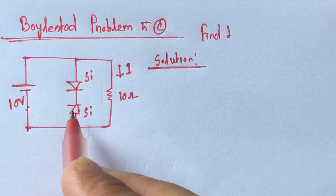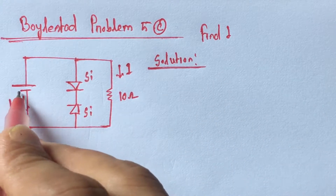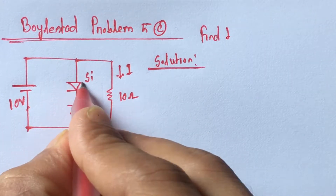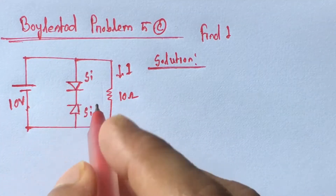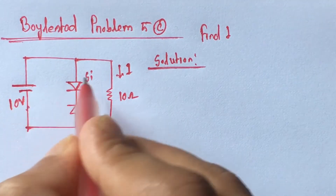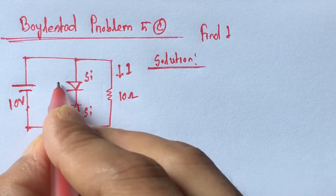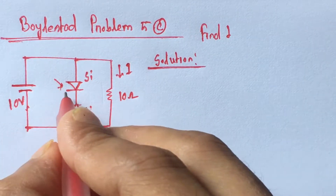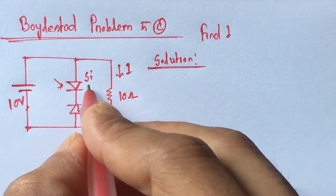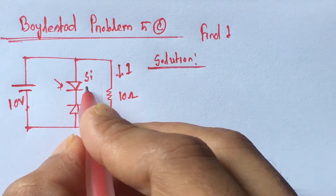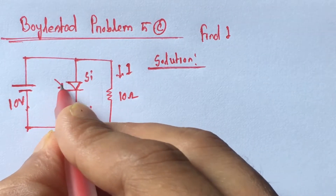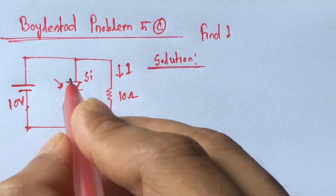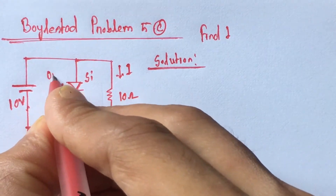From the circuit we see that the biasing voltage is 10 volt and both these diodes are silicon diodes. We see that the first diode is forward biased, and the drop of a silicon diode — 0.7 volt — is lower than the biasing voltage. So the silicon diode is on.